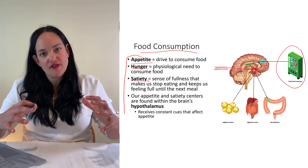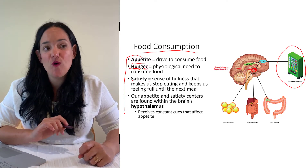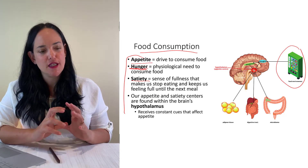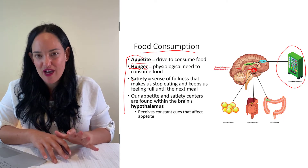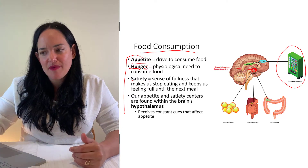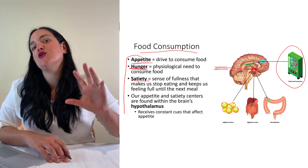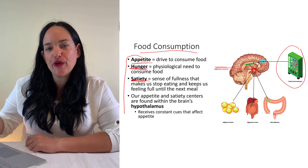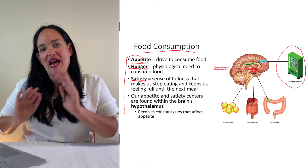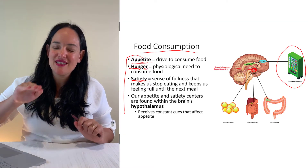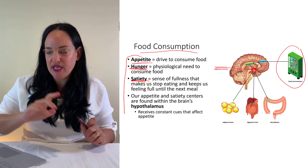Appetite is the overall drive to consume, and it can be influenced by hunger — but not always. Hunger is the need to eat: the rumbling in your stomach or the tiredness from low energy. But we all know we tend to eat even when we're not hungry. Satiety is the opposite of appetite — I think of appetite as the accelerator and satiety as the brakes. Satiety is that stop signal that tells your hypothalamus not to eat so much.